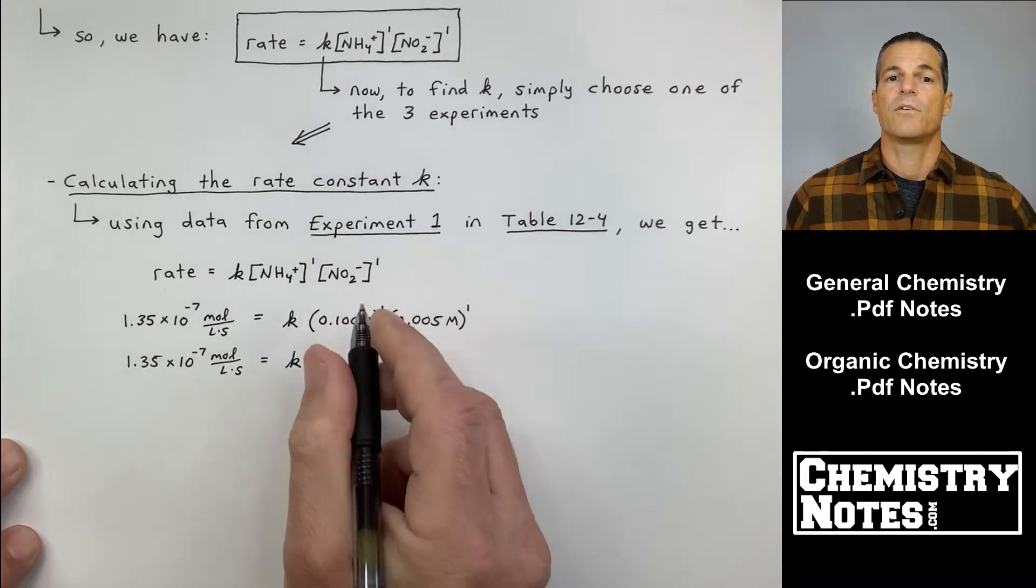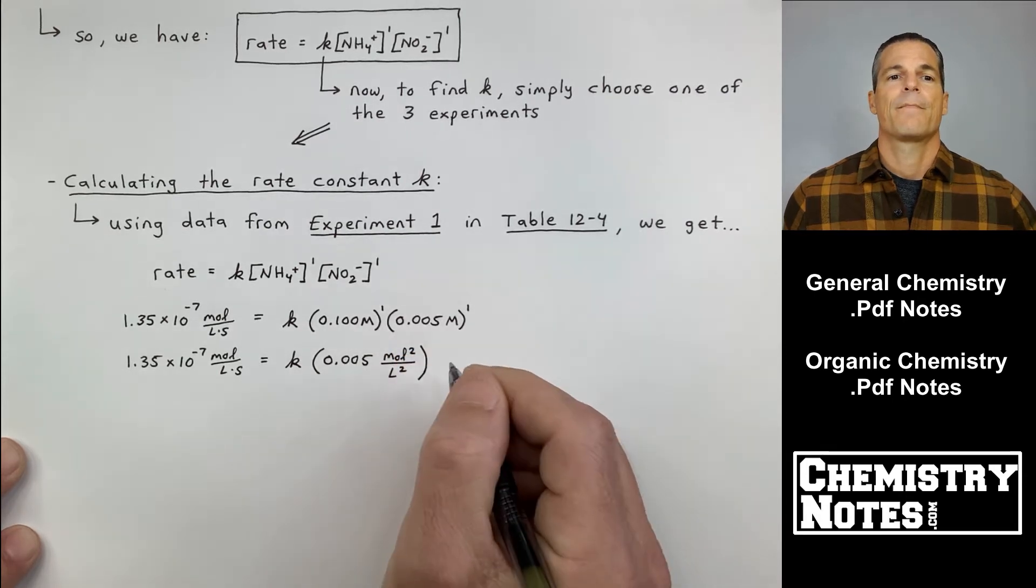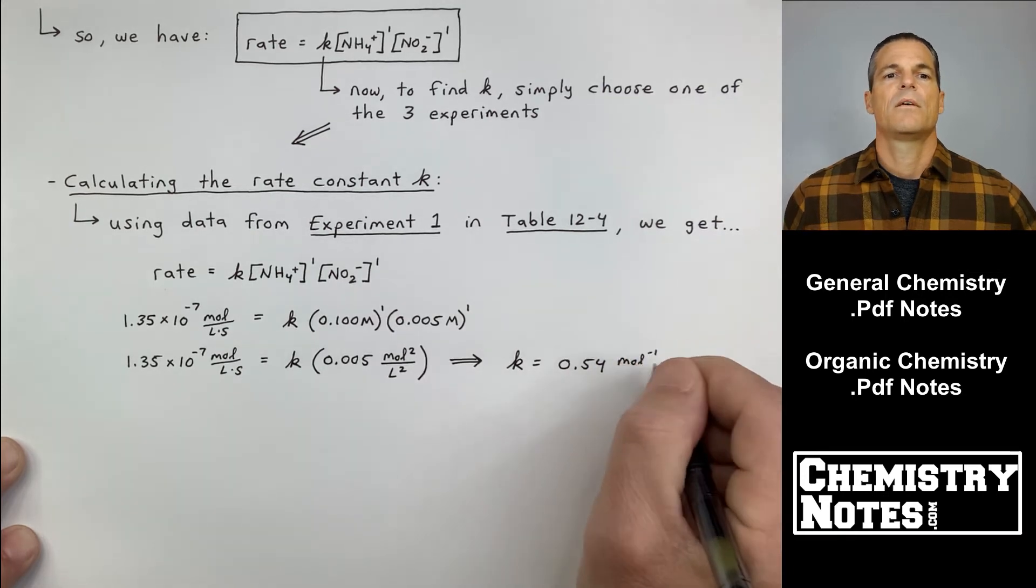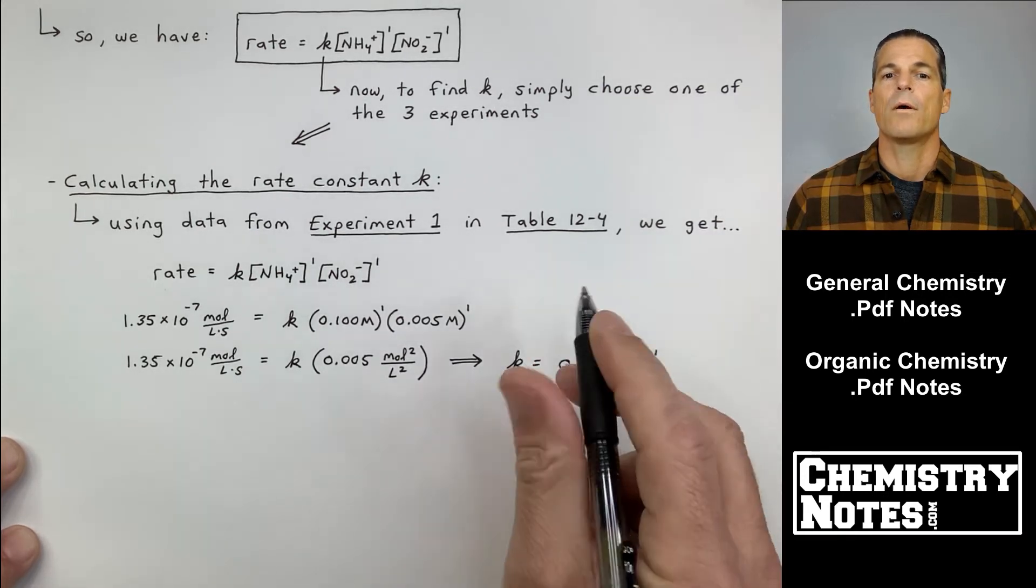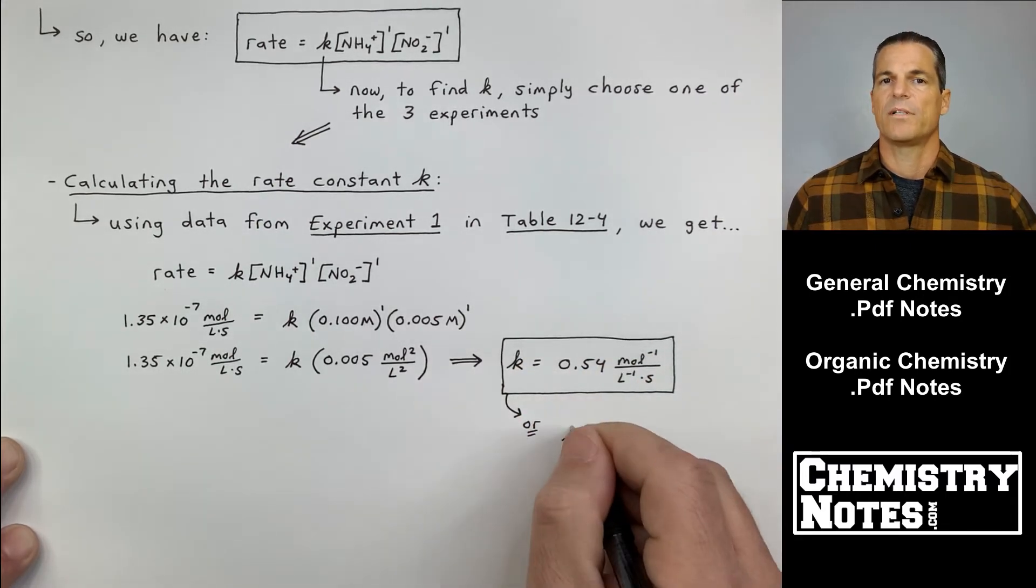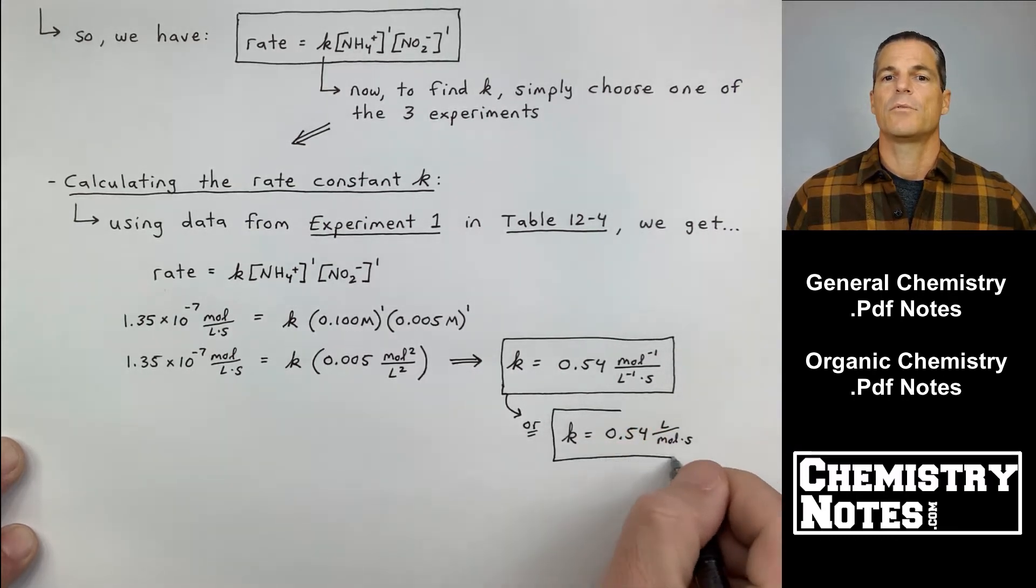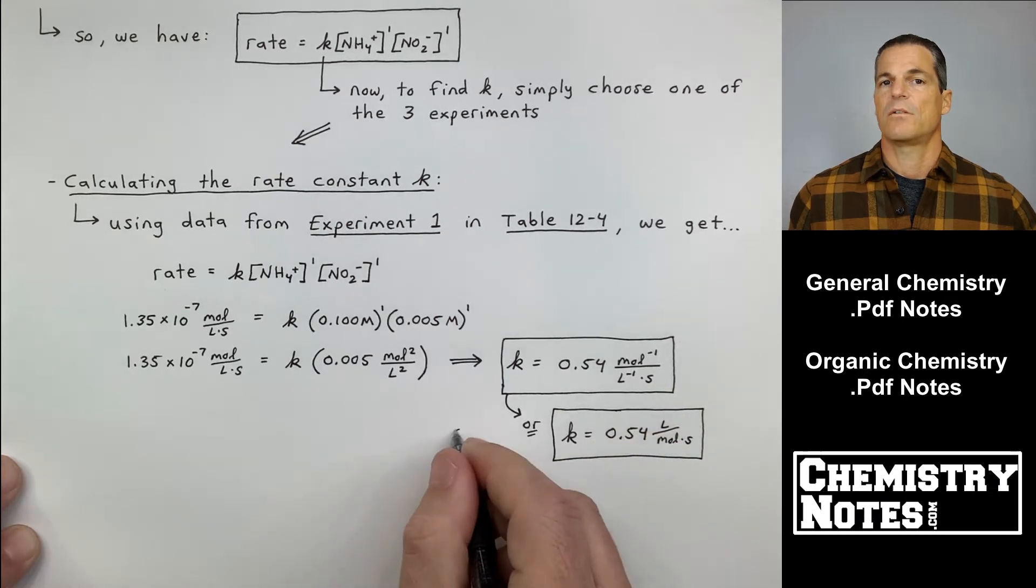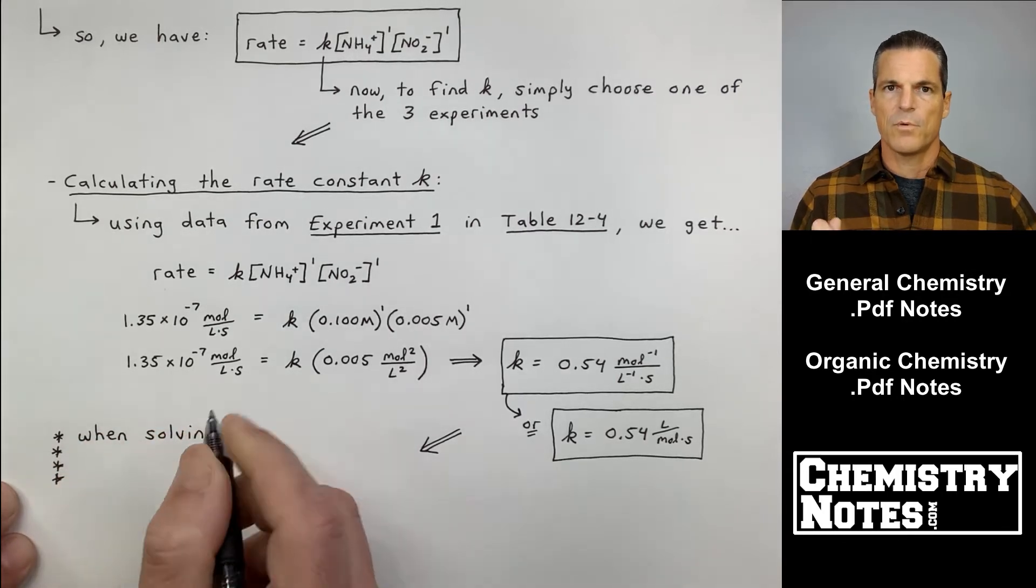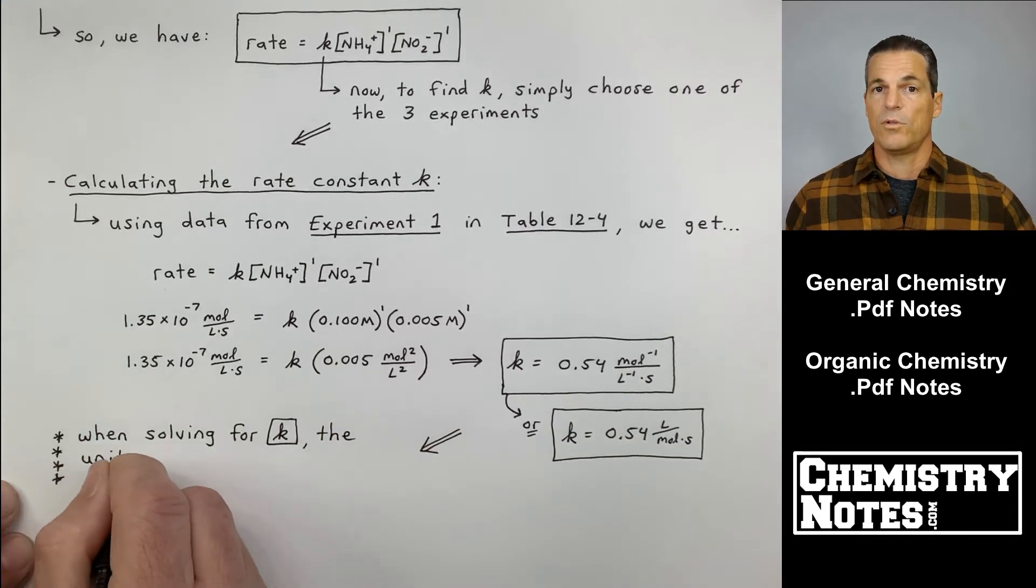The rate for experiment one: 1.35 times 10 to the minus 7th mole per liter per second, that's concentration per second, equals K times 0.100 molar to the one power. Then for NO2-, 0.005 molar to the one power. If I do all the math, be very careful with the units. Finding units for K is the hardest part of all this. I get K equal to 0.54 liters per mole per second. In this particular example, my units for K are liters per mole per second.